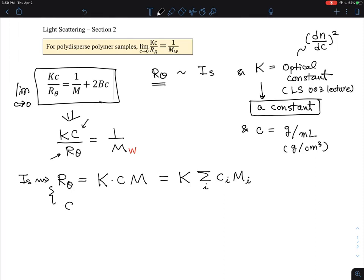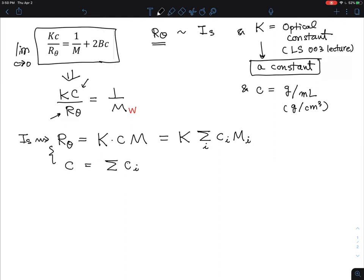The other term you see here is c. The c is nothing but the i-mers of different mass per volume contributions to the total mass per volume. I'm going to put that together and see what is defined as 1 over M, which is Kc over Rθ for polydisperse samples.